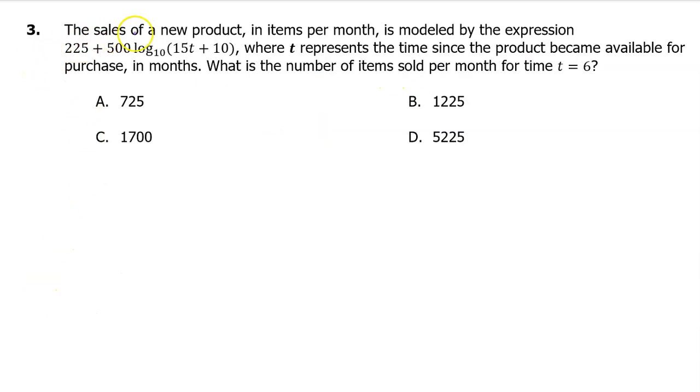Number 3. The sales of a new product in items per month is modeled by the expression 225 plus 500 log base 10 of (15t plus 10), where t represents the time since the product became available for purchase in months. What is the number of items sold per month for time t equals 6?